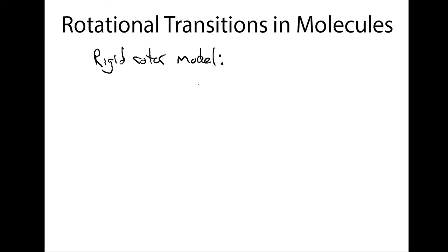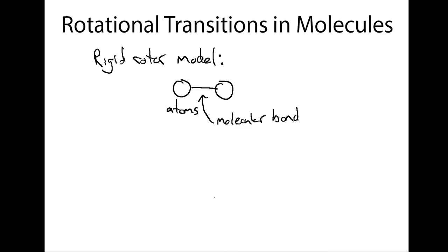In the rigid rotor model of a molecule, atoms are connected together by bonds that arise from the exchange of valence electrons. Although this molecular bond is not completely static, to a good first approximation the molecular bond length is nearly fixed. If you accept that, the method for calculating the quantized angular momentum states of these molecules is pretty straightforward.